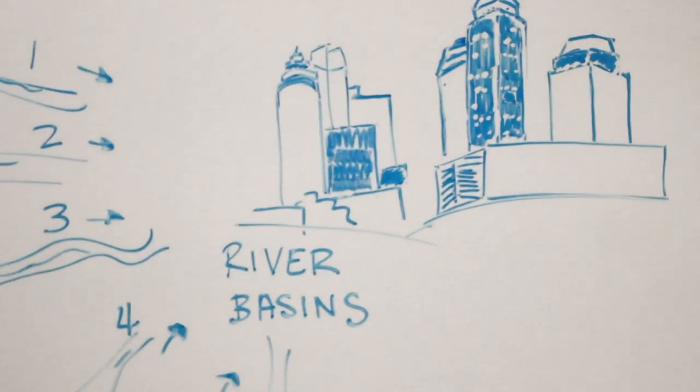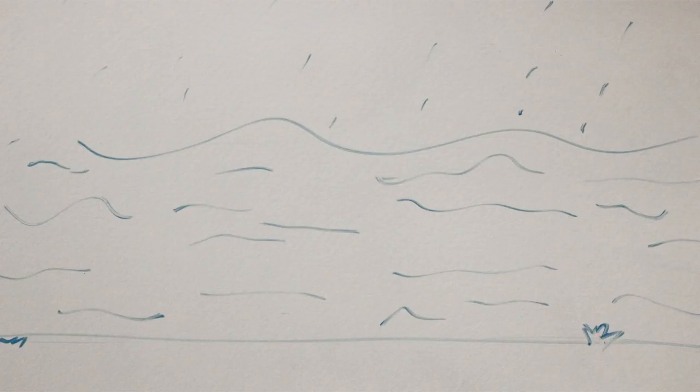Currently, Atlanta receives its water from five small river basins, all supplied by rainfall.